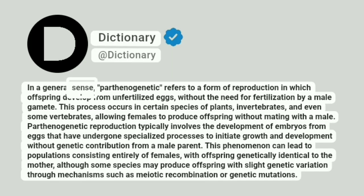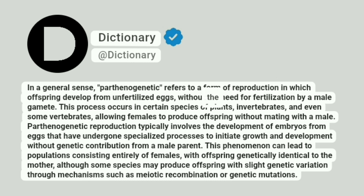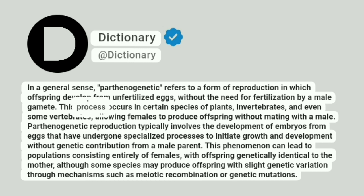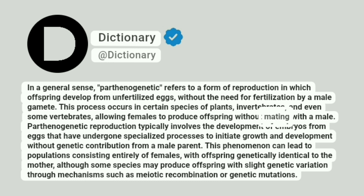In a general sense, parthenogenetic refers to a form of reproduction in which offspring develop from unfertilized eggs, without the need for fertilization by a male gamete. This process occurs in certain species of plants, invertebrates, and even some vertebrates, allowing females to produce offspring without mating with a male.